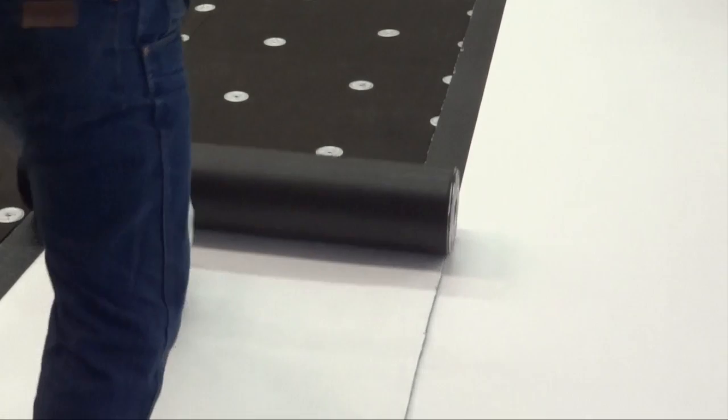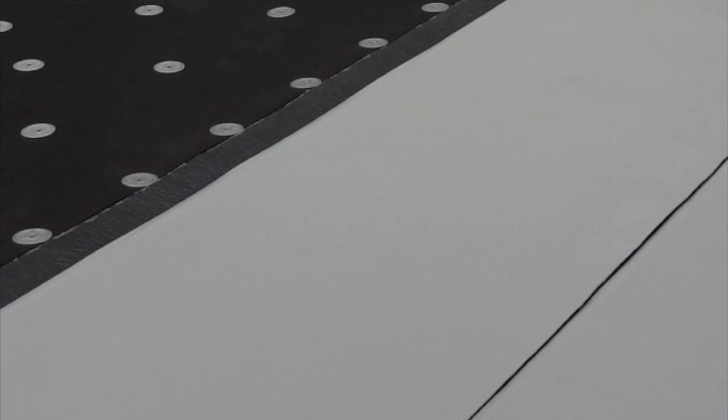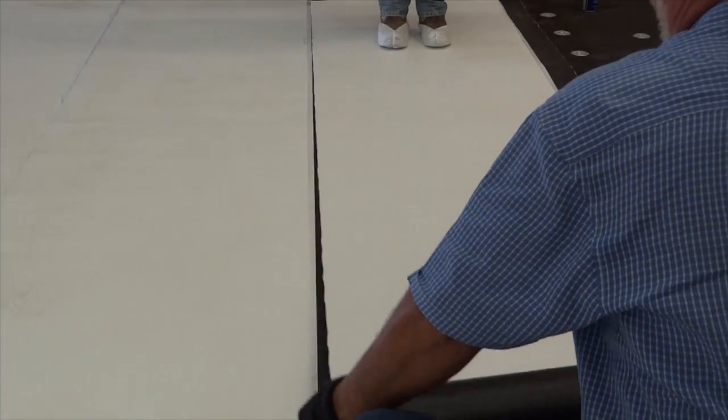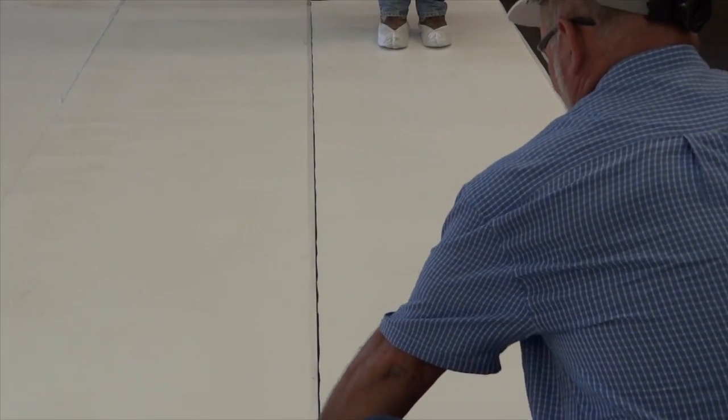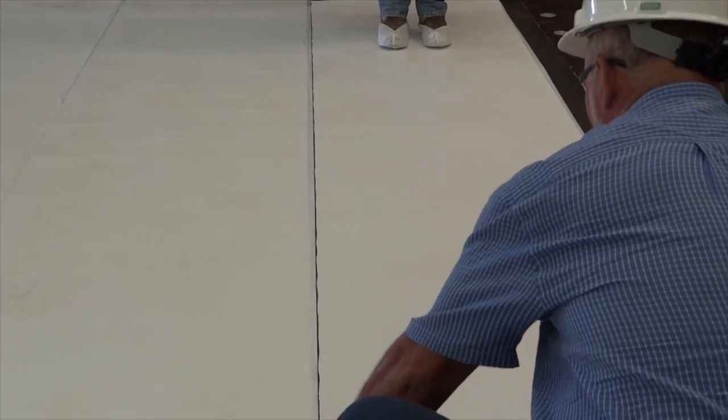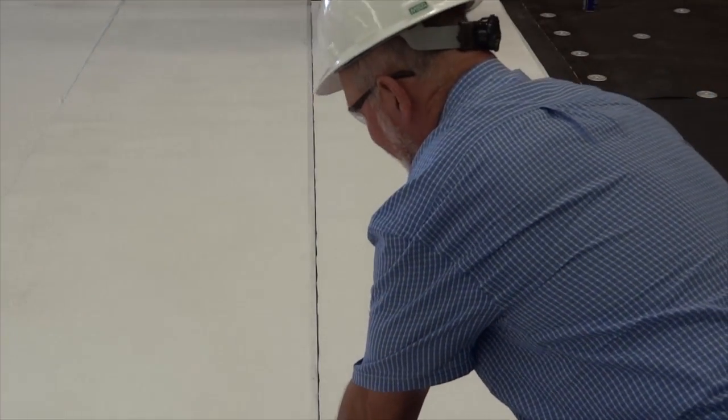When working on a slope or uneven substrate, unroll the membrane completely, allow time to relax, and work out any wrinkles that could cause misalignment or cause the membrane to curve downslope. This can be accomplished by having one person stand on one end of the roll, while another person at the opposite end of the membrane shifts it from side to side, helping the membrane to lay flat and align properly without wrinkles.